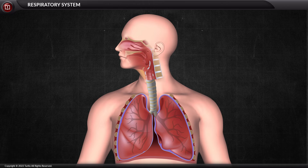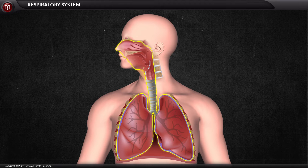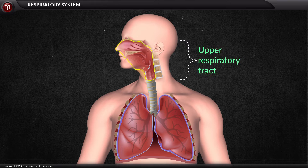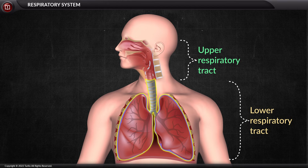The human respiratory system consists of a group of organs and tissues that help us breathe. The respiratory tract is divided into the upper respiratory tract and the lower respiratory tract.